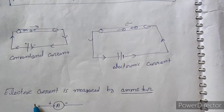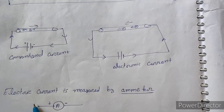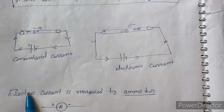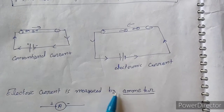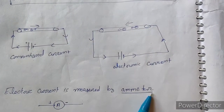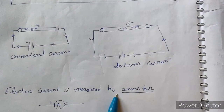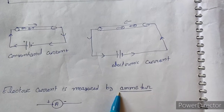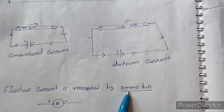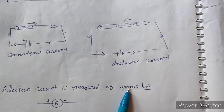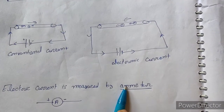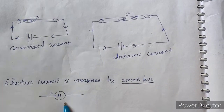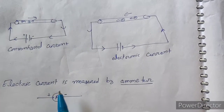Now, how do we measure electric current? Electric current is measured by an ammeter. Ammeter is a device which is used to measure the magnitude of the current flowing in a circuit. This is the symbol for ammeter.